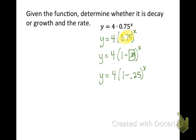Okay, since we have this, we know that it is decay because of this minus sign. So we've got decay, and the rate is 25%. Just like we made it a decimal to put it in the equation, to bring it out of the equation, we need to bring it back to a percent format.